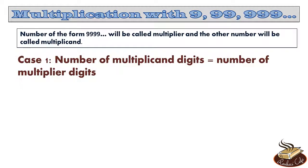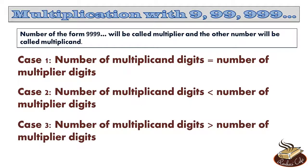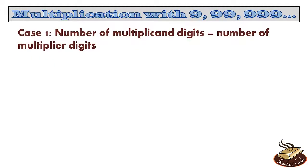The first one is where the number of digits of the multiplicand is equal to the number of digits of the multiplier. The second case will be where the number of the multiplicand digits will be less than the number of the digits of the multiplier. And the final case will be where the number of multiplicand digits is greater than the number of multiplier digits. So let's start with the first one where the number of multiplicand digits is equal to the number of multiplier digits. For example, let's start by multiplying 23 with 99. 23 has two digits and 99 has two digits, so the number of multiplicand digits is equal to the number of multiplier digits.